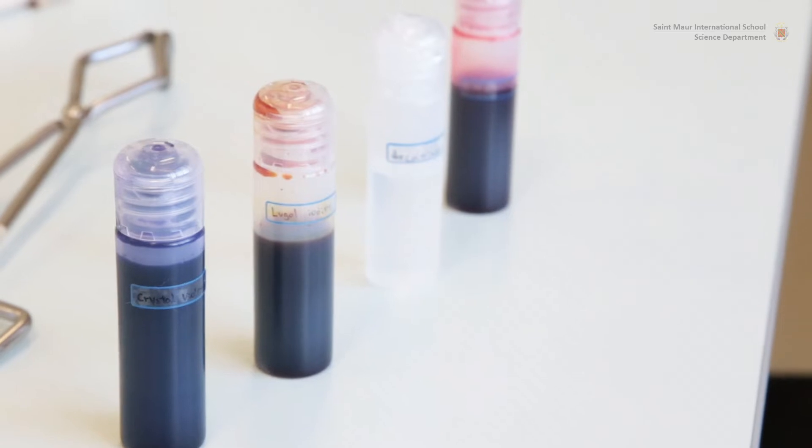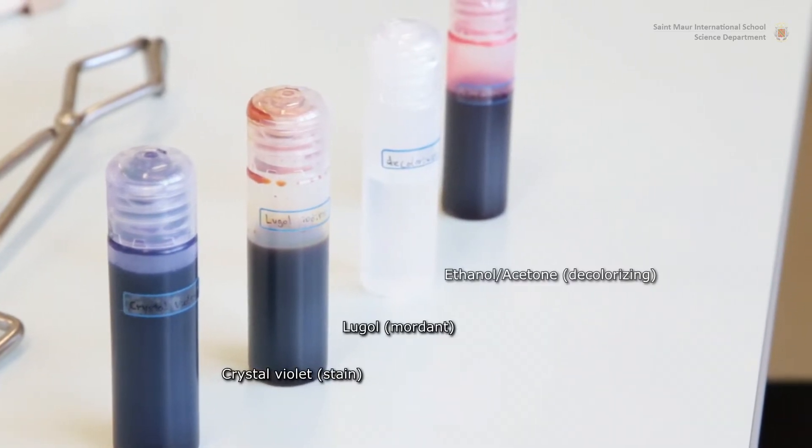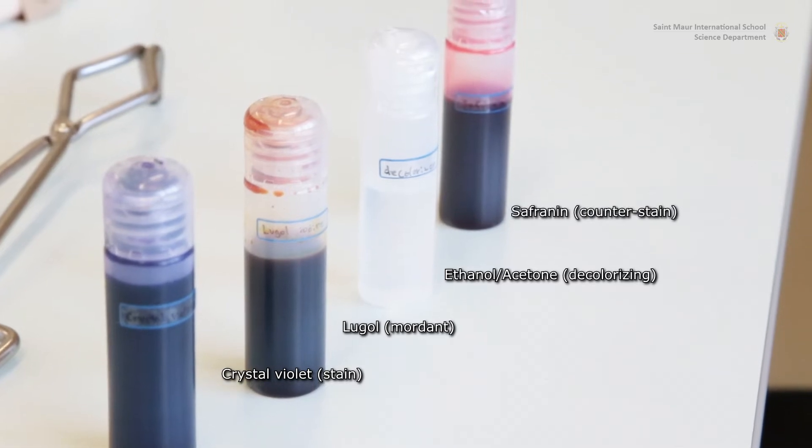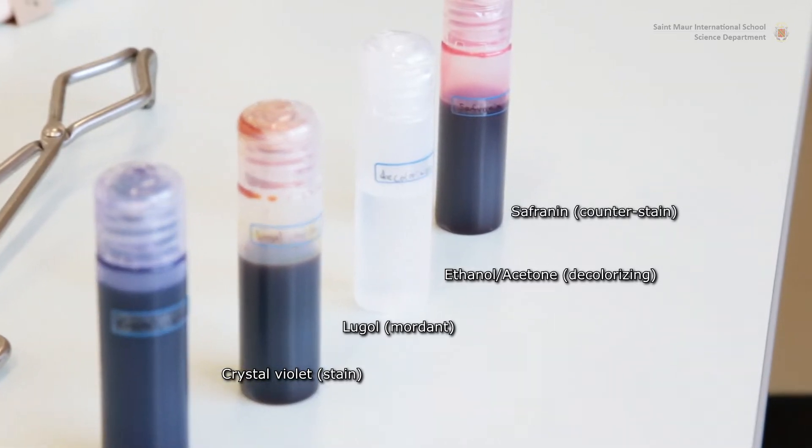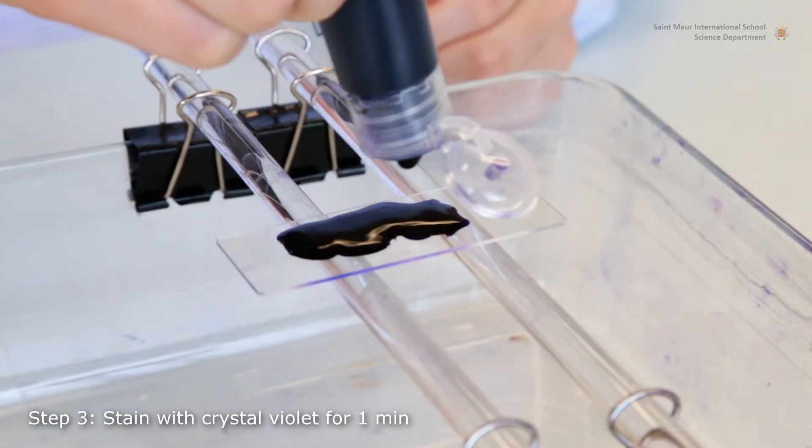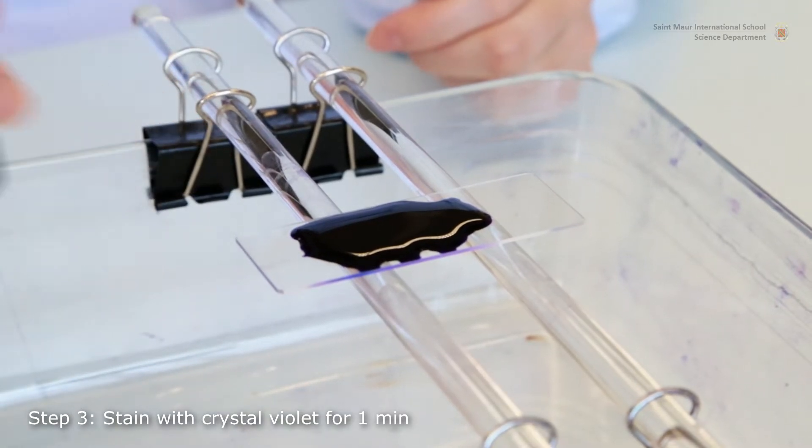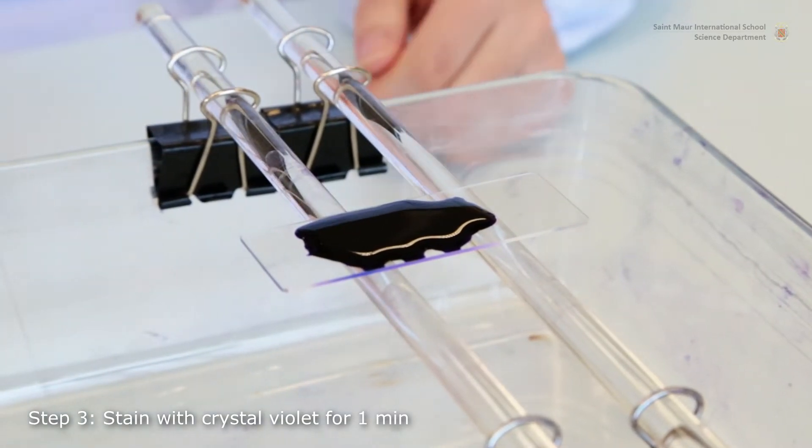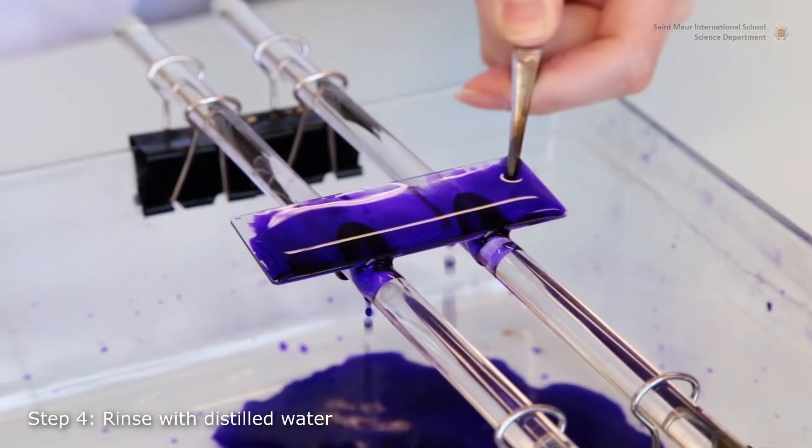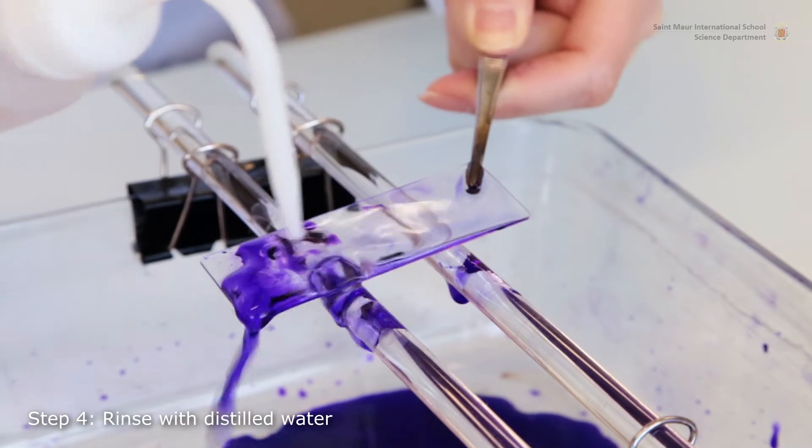Four reagents are needed to complete the procedure. The primary stain crystal violet is first applied to the smear in order to stain all cells. The slide is left for one minute. The excess crystal violet is rinsed out with distilled water.